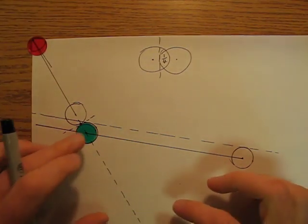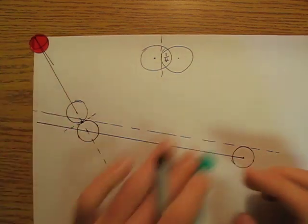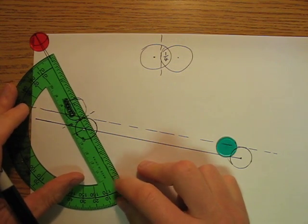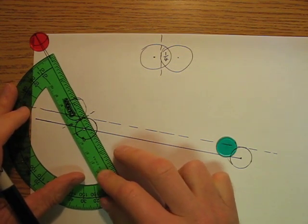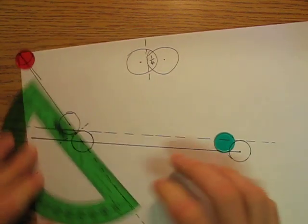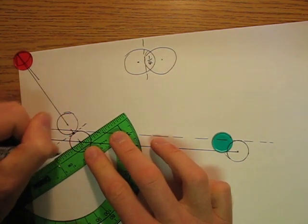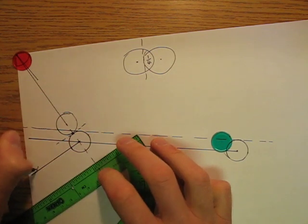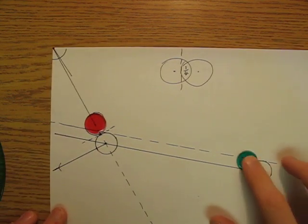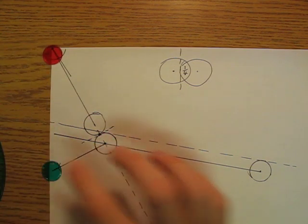So what's going to happen is this green ball is going to go perpendicular to this line, so this green ball is going to head out something along the lines of this. So, green ball comes in, strikes, red ball goes that way, green ball goes that way.